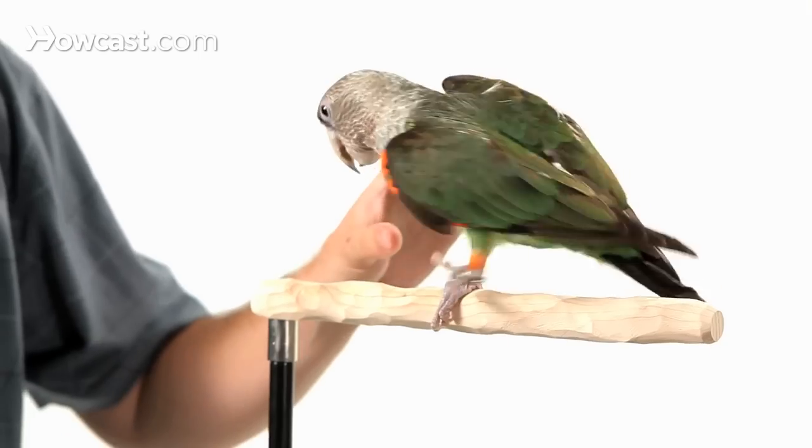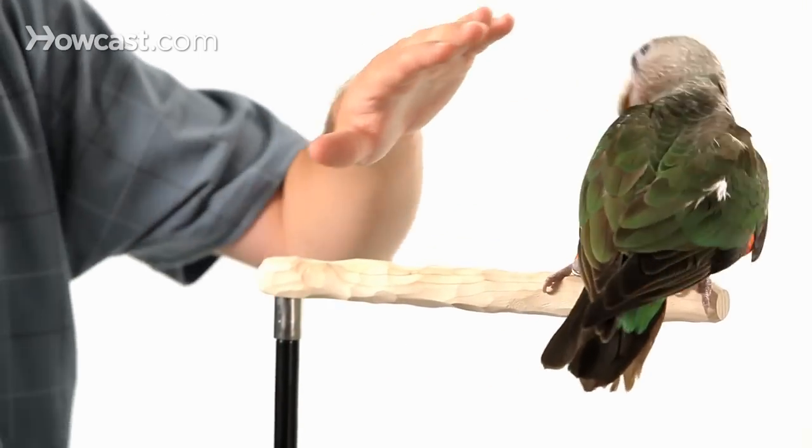Parrots are often afraid of new objects, whether it's a new toy, a training prop you're trying to teach, or possibly a new place or people. A good technique is to use the training you've been learning to desensitize the parrot, distract it from its fears, and then slowly expose the things it fears without making it any more scared.